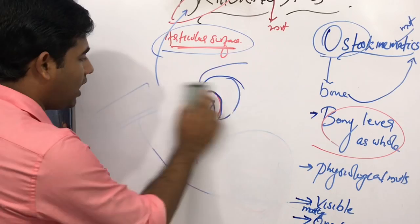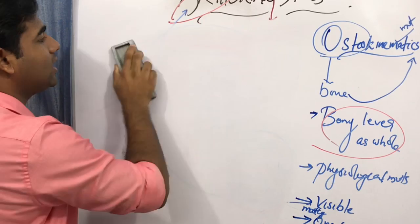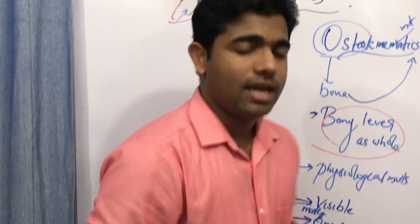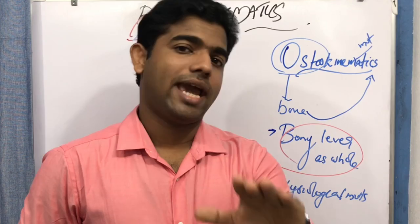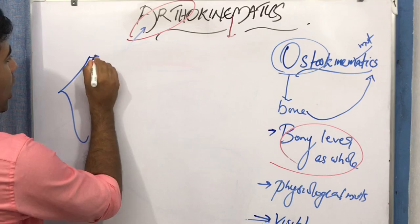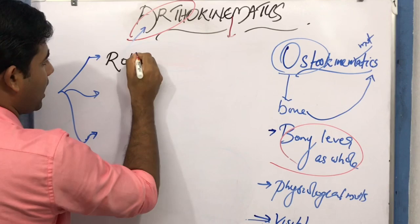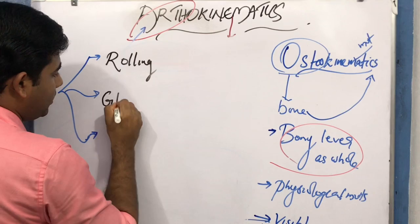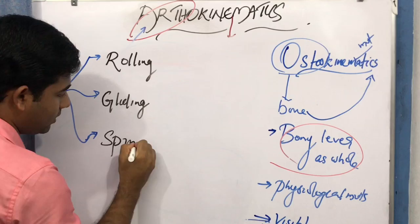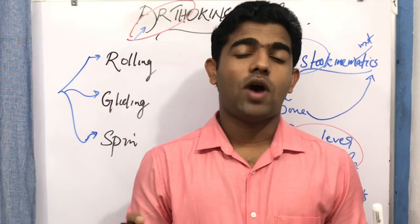Osteokinematic movement types include flexion, extension, abduction, adduction, medial rotation, and lateral rotation — whatever movements happen in the human body. Arthrokinematic movements can be divided into three basic types: rolling, gliding, and spin. These are the three basic movements happening in terms of arthrokinematics.